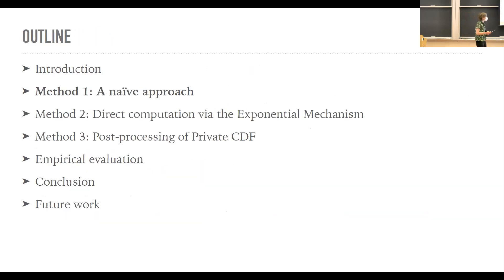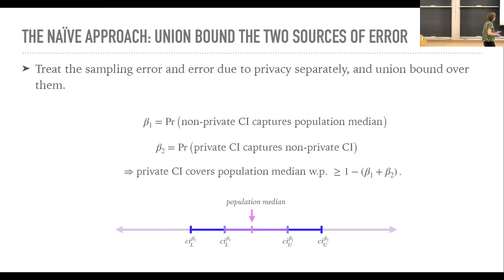Alright, so before I get into what we actually did, I'm going to talk about what we did at first, which didn't work very well. And maybe you can take some takeaways from that. So the first thing you might think was, okay, well, the challenge of differentially private confidence intervals is that we have these two sources of error that we're handling. We have the error due to sampling, which is just inherent. And then we have this added error on top of that, which is due to differential privacy.